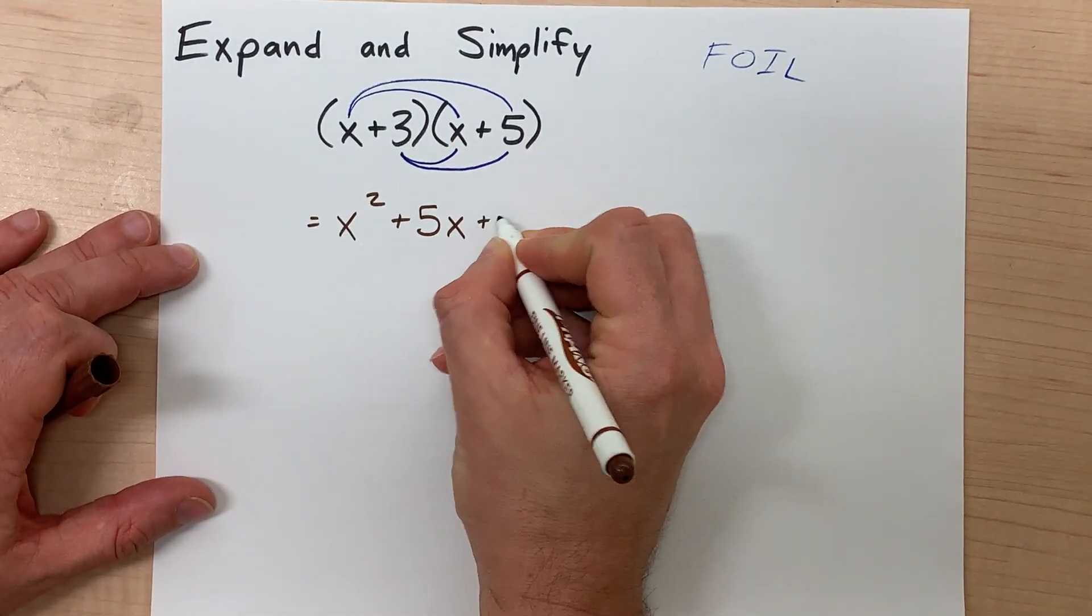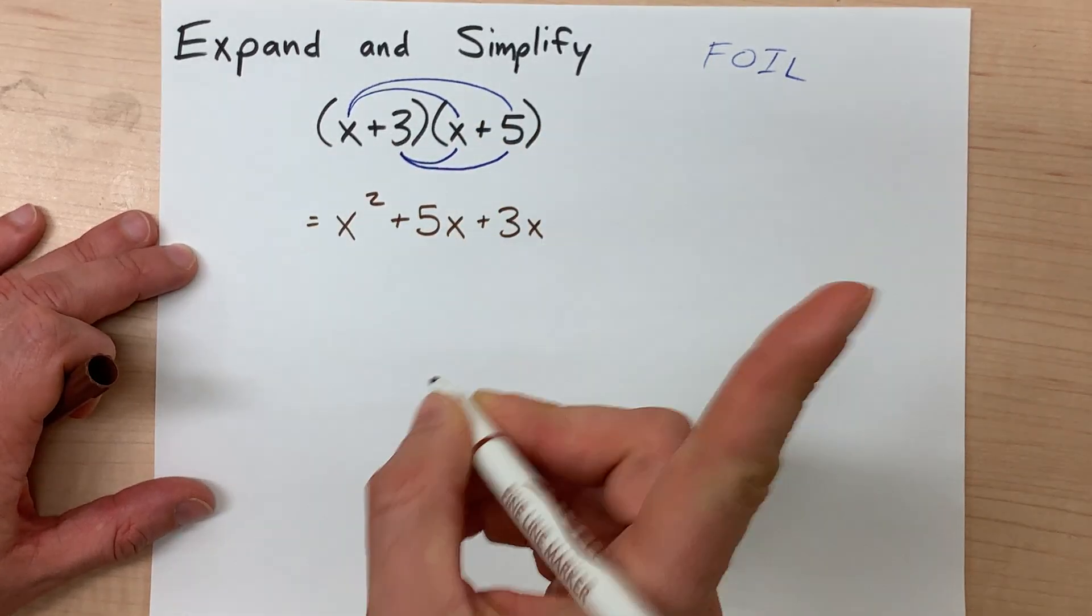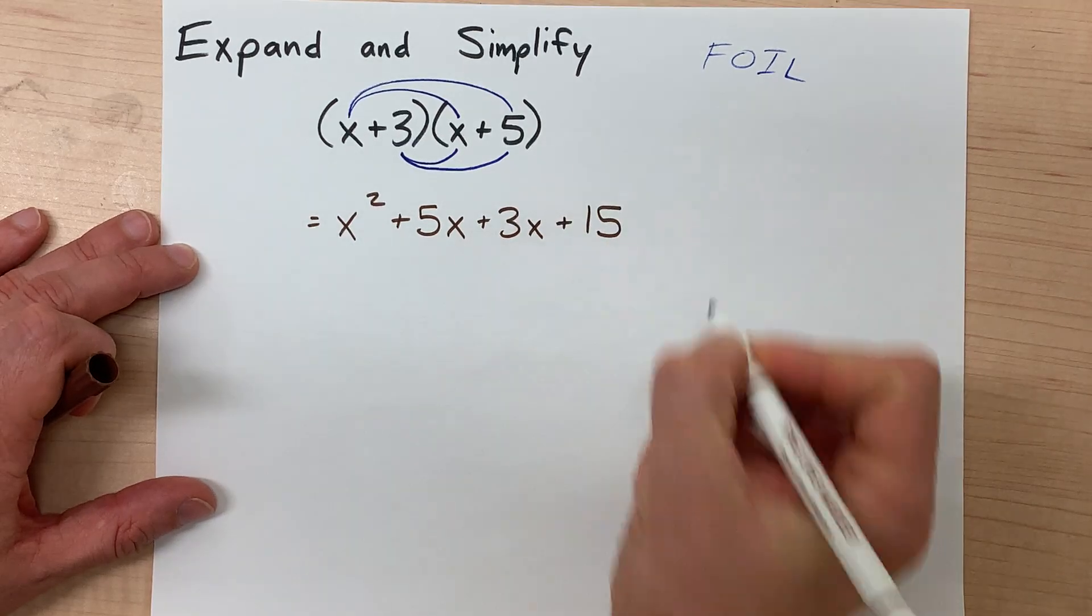Positive 3 times x is positive 3x, and positive 3 times positive 5. We actually can do that. It's positive 15.